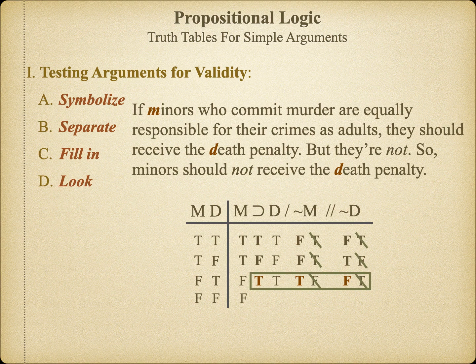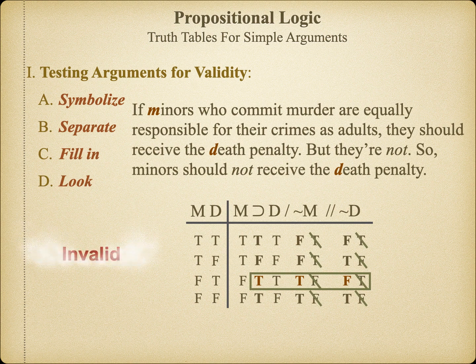But just to be thorough, let's go ahead and fill in the last line to complete our truth table. Because we discover that in universe three the premises would turn out to be true and the conclusion is false — that is all the evidence we need to demonstrate that this argument is busted. And this is such a common mistake that this fallacy gets its own name: it's called denying the antecedent.